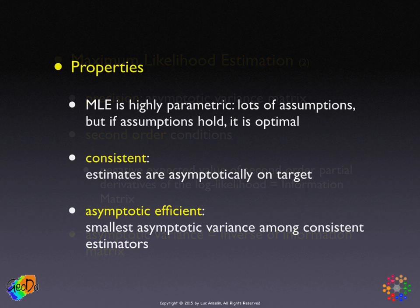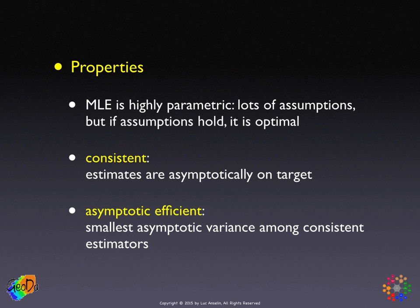Why is this a good thing? This maximum likelihood estimator is as good as we can do, given the assumptions. It is highly parametric — we make assumptions about the distribution that fully specifies the data — but in return we get something optimal in many ways. It is consistent and asymptotically on target, which requires a law of large numbers to prove. It is asymptotically efficient, having the smallest asymptotic variance among consistent estimators.